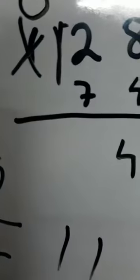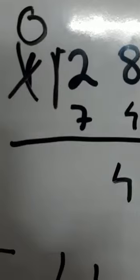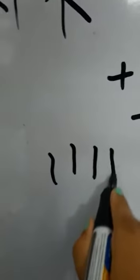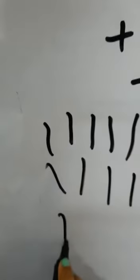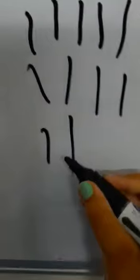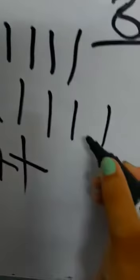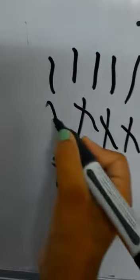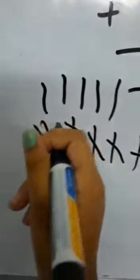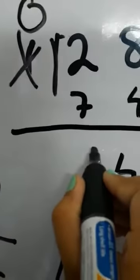And we will give the 1 to make 12. So 1, 2, 3, 4, 5, 6, 7, 8, 9, 10, 11, 12. And now we are going to cancel 7 sticks: 1, 2, 3, 4, 5, 6, 7. So 5 sticks are remaining. So our answer will come as 5.